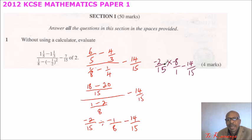So this will be minus and minus. You get positive. So 2 times 8, you get 16. Divide by 15 times 1 is 15. You minus 14. Divide by 15.